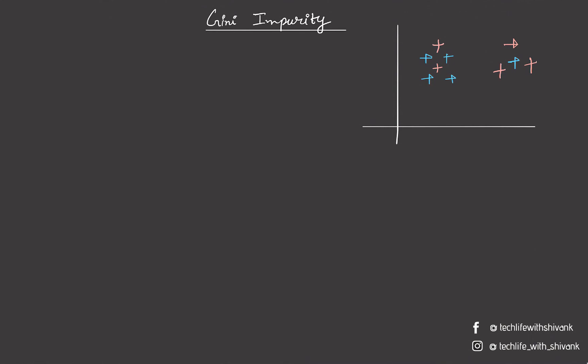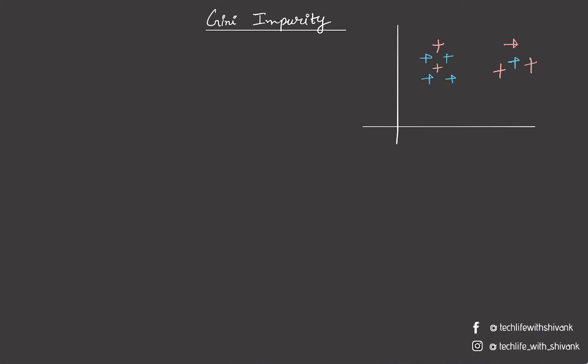In the previous video we saw that error for any region R for a classification problem can be calculated as the fraction of data points which are misclassified. However, in practice there exist better error methods that we can use to decide our splits in a decision tree, and one such error method is known as Gini impurity.